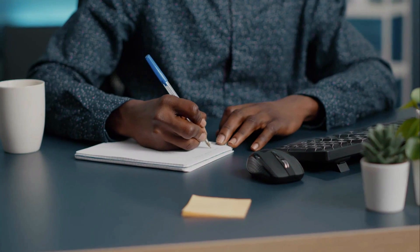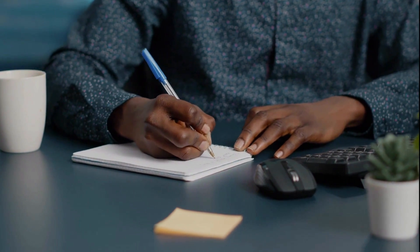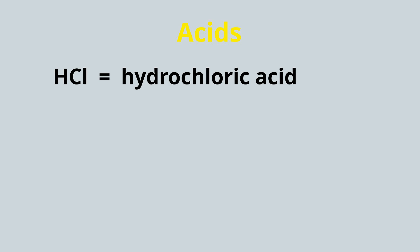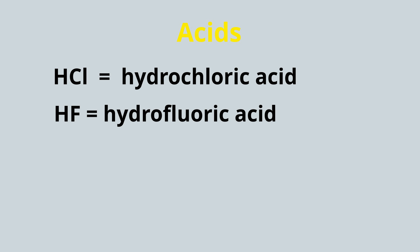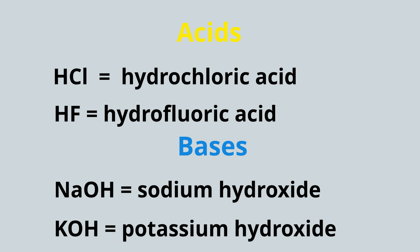Acids typically have a hydrogen in front of them in their chemical formula. HCl is hydrochloric acid, and HF is hydrofluoric acid. Bases typically have a hydroxide ion. NaOH is sodium hydroxide and is a base, and KOH is potassium hydroxide and is also a base.